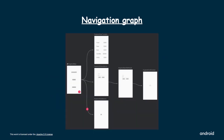Navigation graph is an XML resource that contains all navigation-related information in one centralized location. This includes all the individual content areas within your app called destinations, as well as the possible paths that a user can take through your app. Navigation occurs between your app's destinations — anywhere in your app to which users can navigate. These destinations are connected via connections. The navigation graph is a resource file that contains all of your destinations and actions, representing all of your app's navigation paths. The figure shows a visual representation of a navigation graph for a sample app containing six destinations connected by five actions. Each destination is represented by a preview thumbnail and connecting actions are represented by arrows that show how users can navigate from one destination to another.